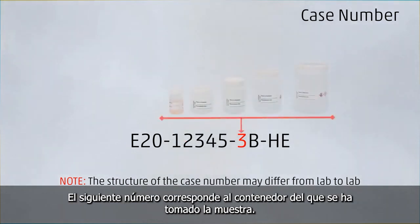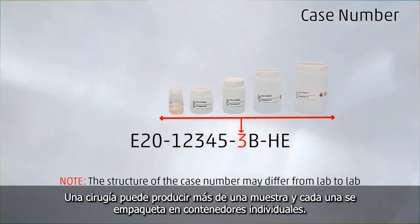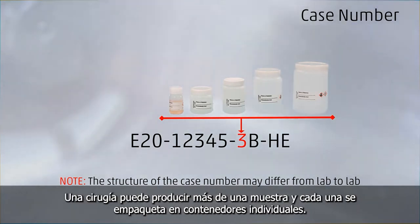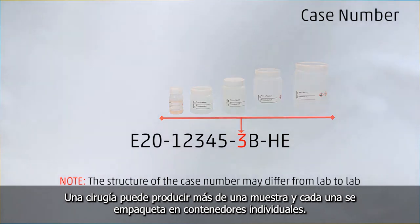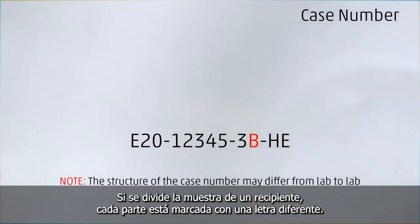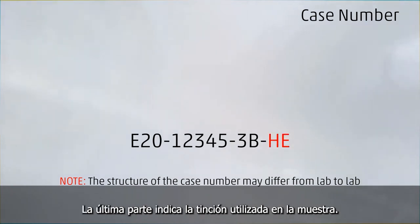The next number corresponds to the container the sample has been taken from. A surgery can yield more than one sample, and each one is packed into individual containers. If the sample from one container is split, each part is marked by a different letter. The last part indicates the staining used on the sample.